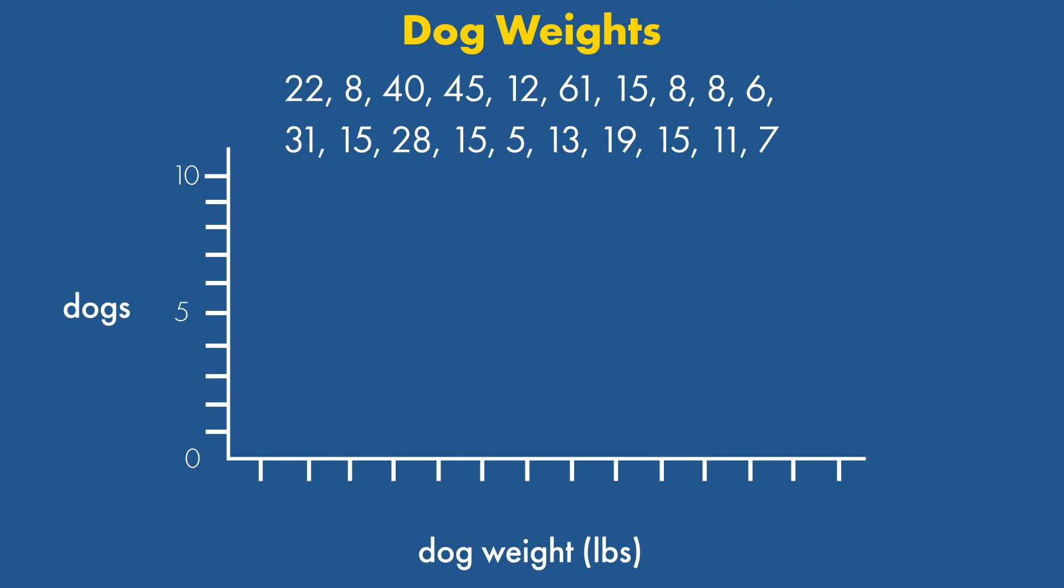For example, we could use increments of 5 pounds or increments of 10 pounds. Let's start with bins of size 10. So our labels would be 0 to 10 pounds, 10 to 20 pounds, and so on. Some histogram labels show the ranges, while others label only the boundaries.